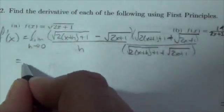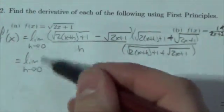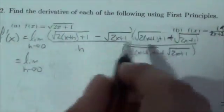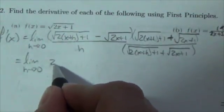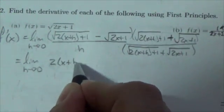So this will be the limit as h approaches zero. You have to keep writing that until you actually take the limit. When you multiply that out we're going to lose the square roots.